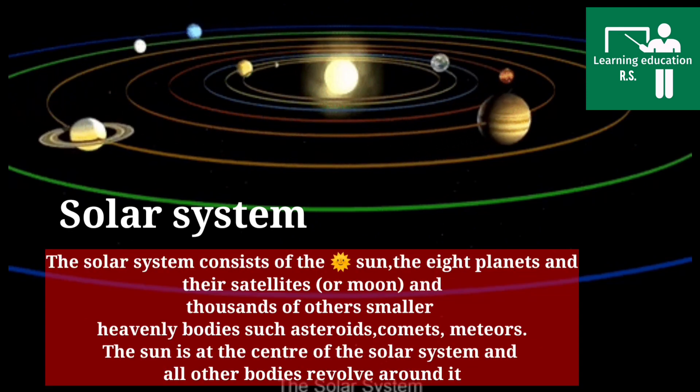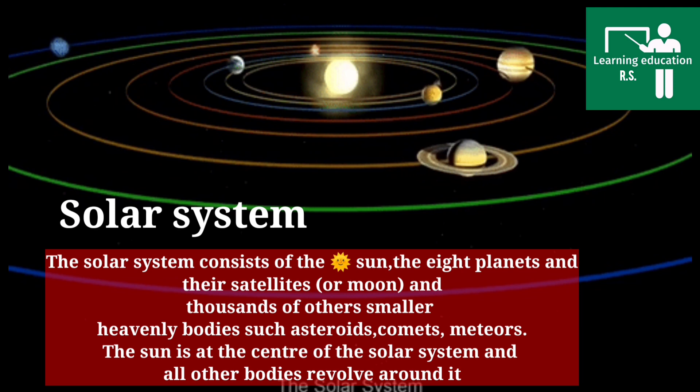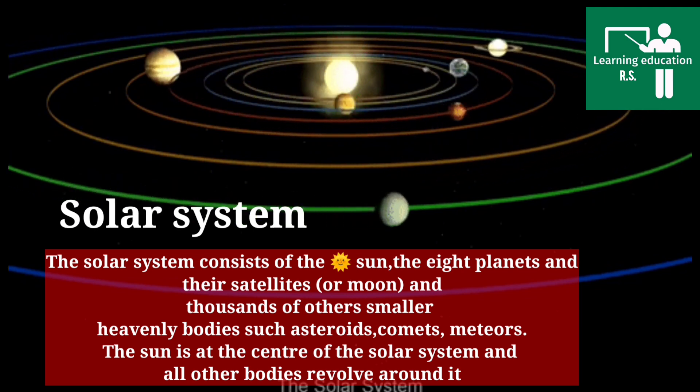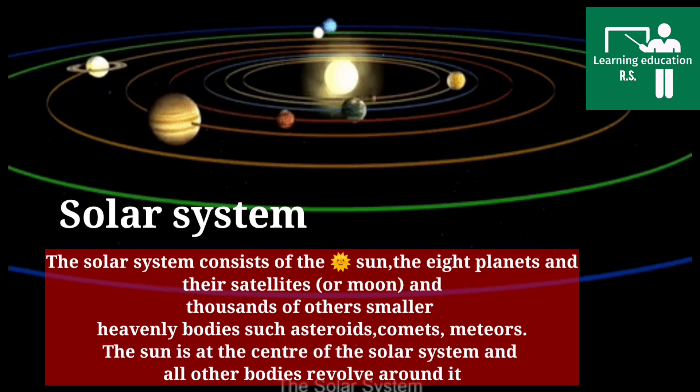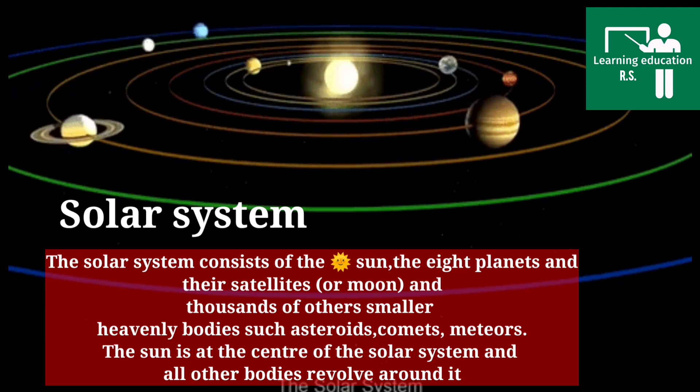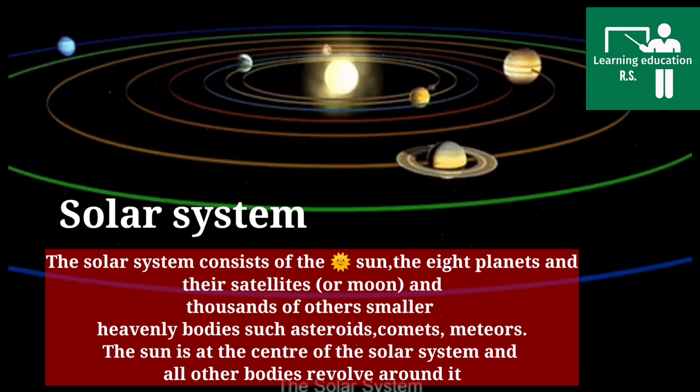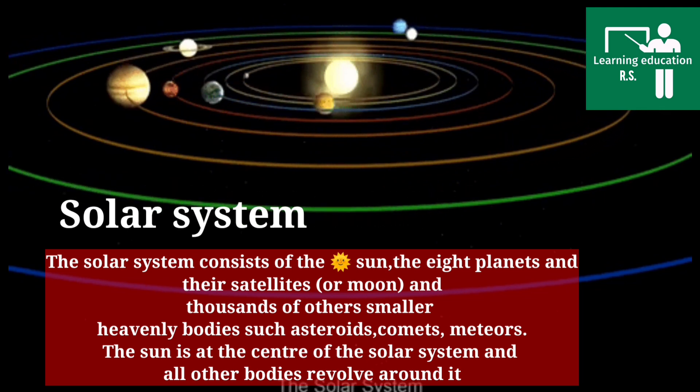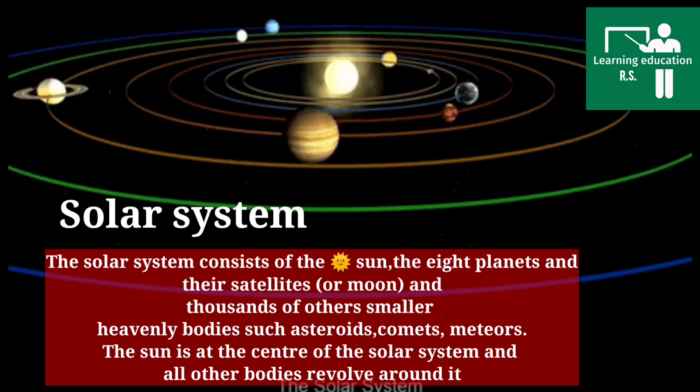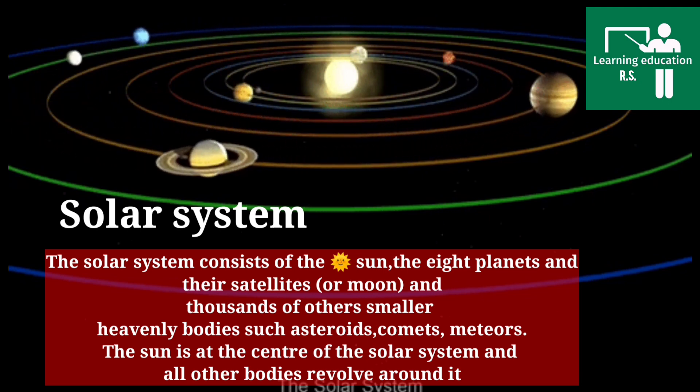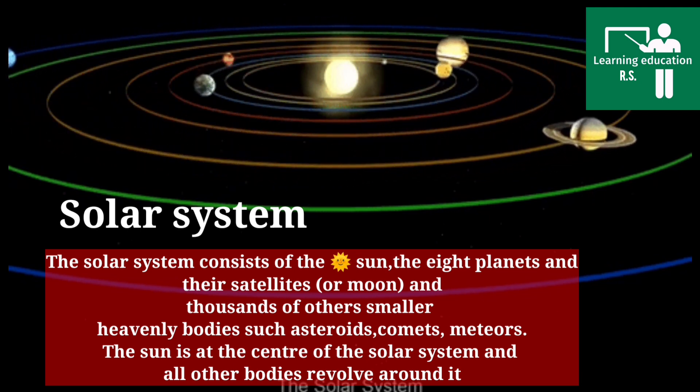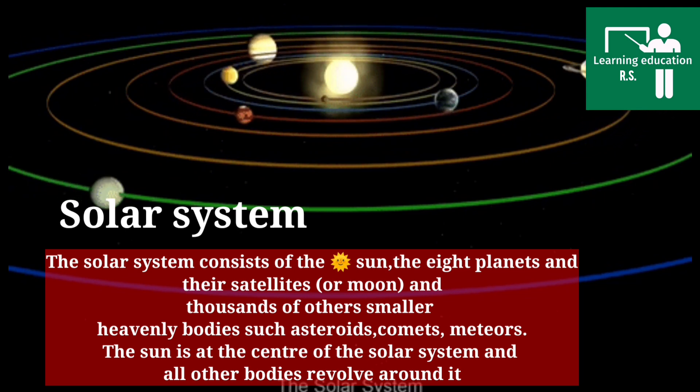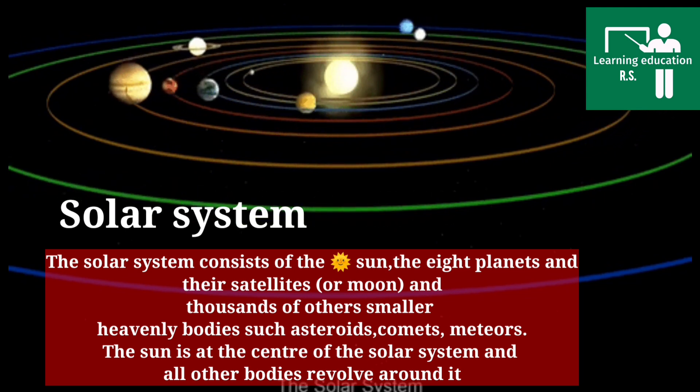What is the solar system? The solar system consists of the sun, which is at the center, eight planets and their satellites. The moon is the only natural satellite of Earth. There are thousands of smaller heavenly bodies such as asteroids, comets, shooting stars, and meteors. All these revolve around the sun. The sun is at the center of the solar system and other bodies revolve around it.